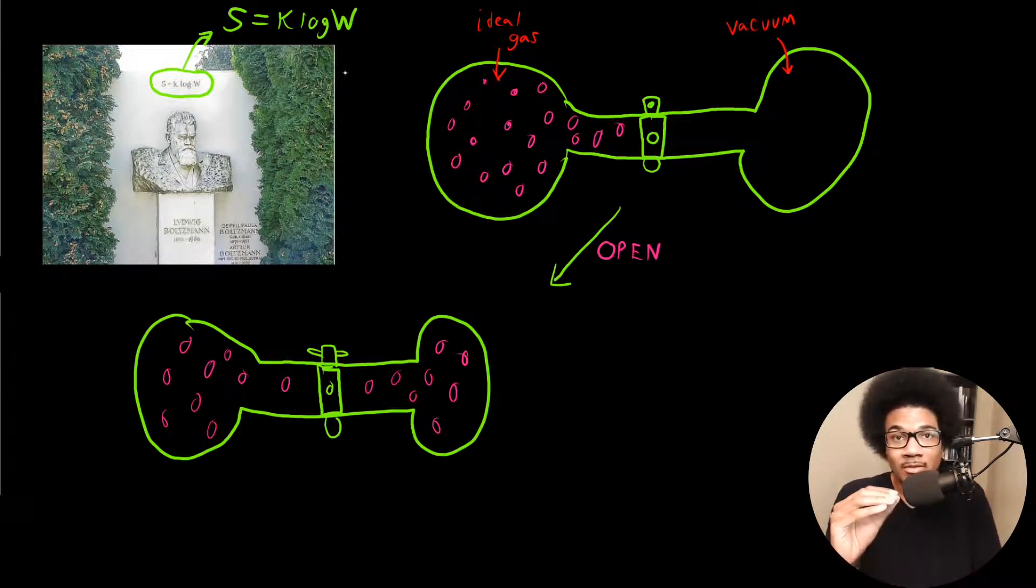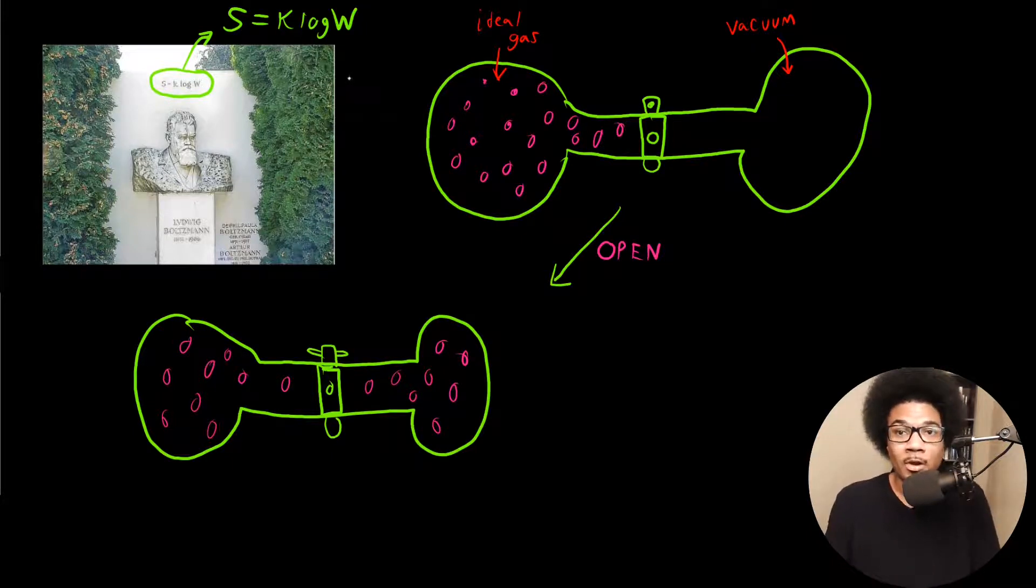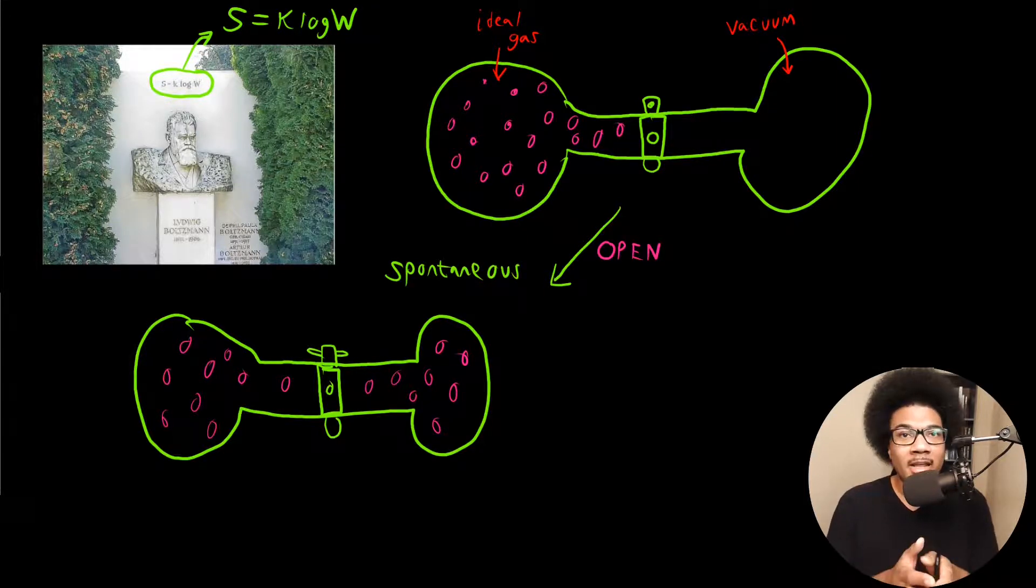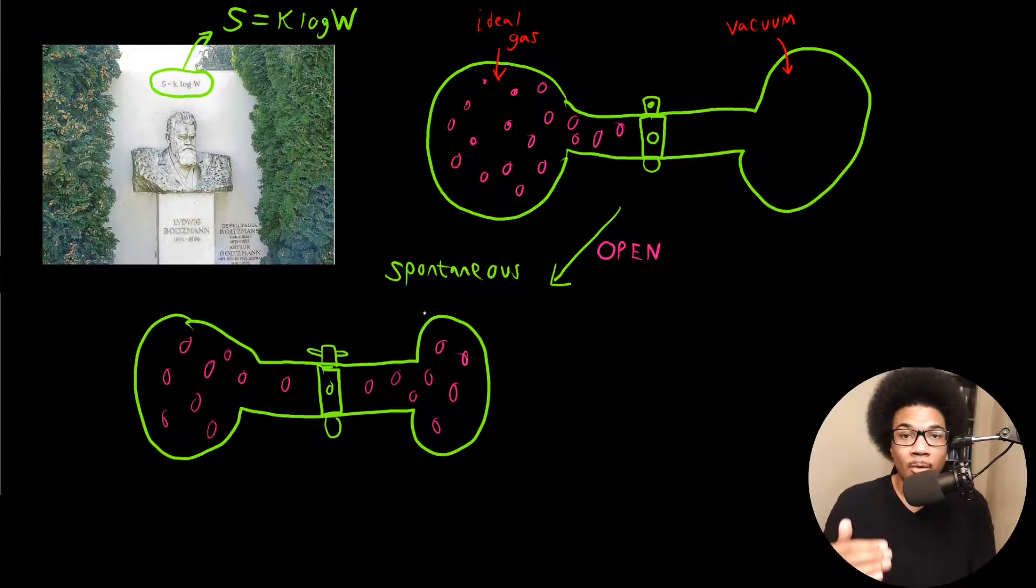What I want to do for the rest of this video is just give you a little bit of insight into how intuitive entropy is in discussing what processes are likely to occur. So let's think about this following example that I have drawn out here. What I have here is a two-bulb system that has a stopcock in the middle that you can turn to open or close respectively. In this one, I have an ideal gas on the left bulb and a vacuum on the right bulb. So if you open this stopcock, then the gas is going to expand spontaneously. This opening and expansion of the gas is going to be a spontaneous process.